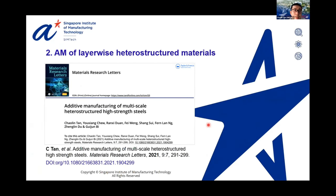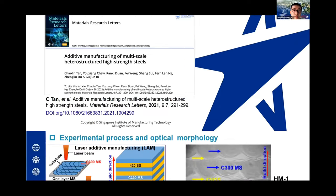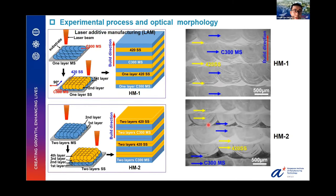The second part covers laser additive manufacturing of layer-wise heterostructured material, which has been published — please access that paper for more details. We chose two types of high-strength steel: maraging steel (MS) and stainless steel (SS). We designed two patterns: the first alternates the two materials every one layer, and the second changes the two materials every two layers, repeatedly building up the bulk sample.